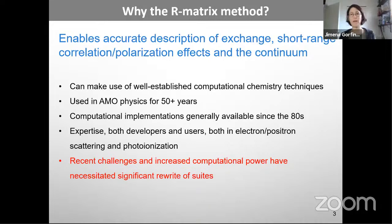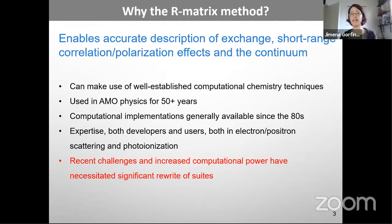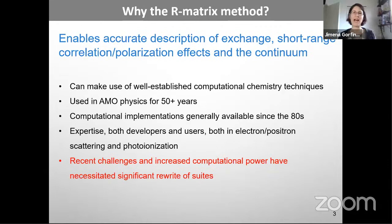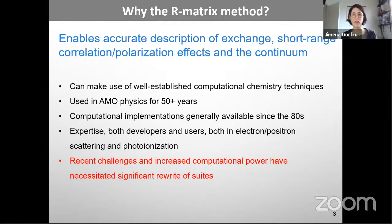The R-matrix approaches, though originating from nuclear physics, have been used in atomic and molecular physics for 50 years or more, with computational implementations generally available since the 1980s — software shared relatively freely among researchers. This enabled a community of developers and users. Having a user community means the codes get tested, bugs are reported, and it's worth investing in development since many people will benefit.